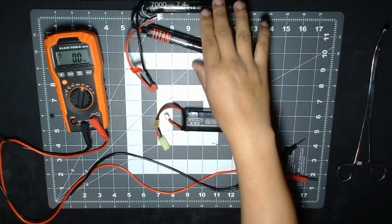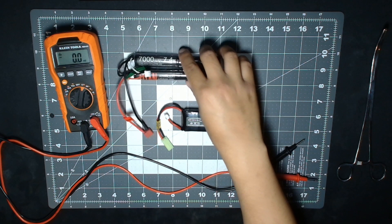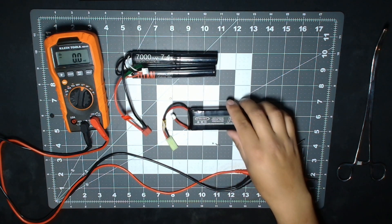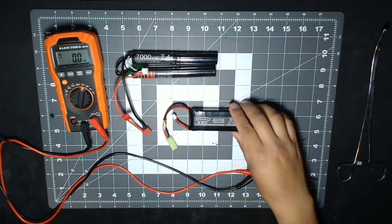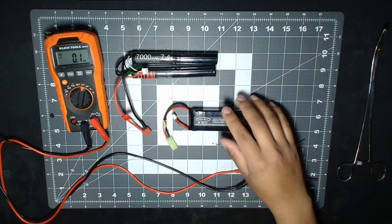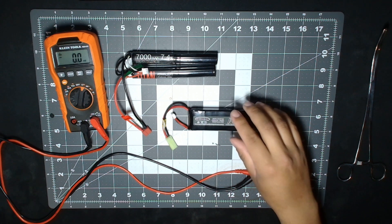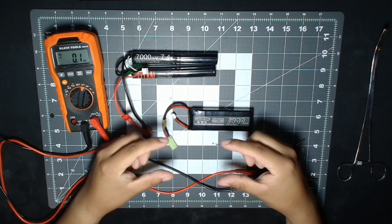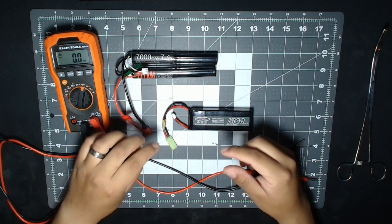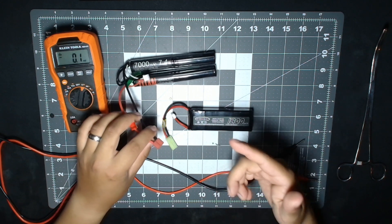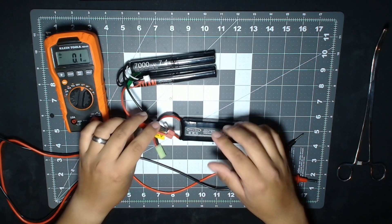You could also do amp calculations, but it involves a formula. I normally just like buying a simple inline reader for RC cars and you can plug it between the battery and the gun, shoot the gun, and it will tell you how many amps your gun is drawing.